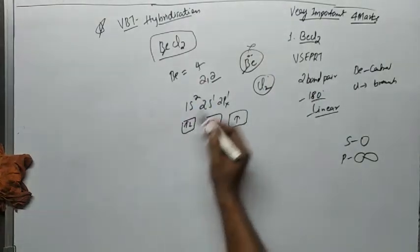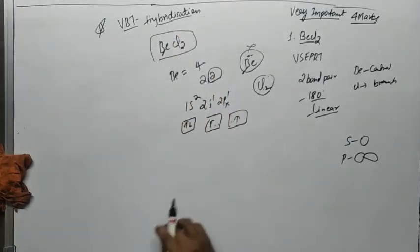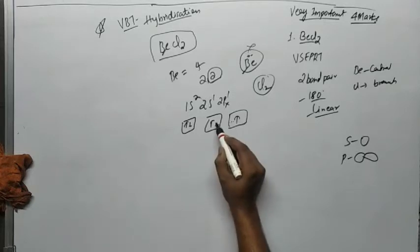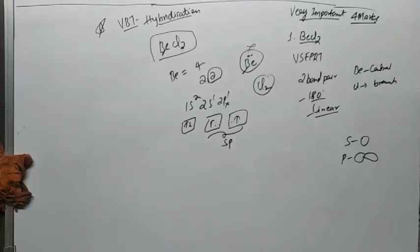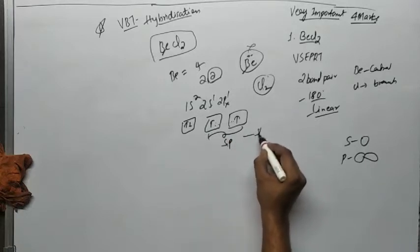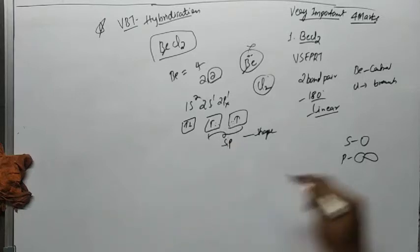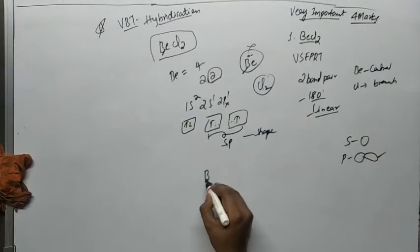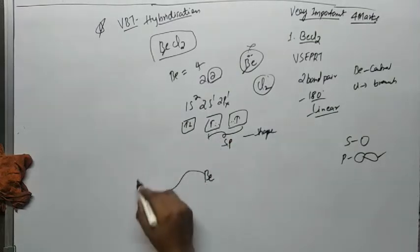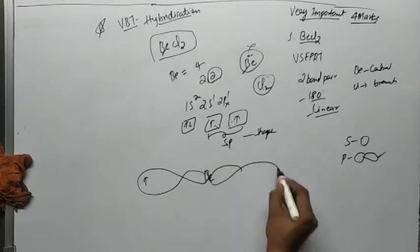Now in BeCl2, beryllium has 4 electrons total with 2 in its last shell. After electron promotion, an electron is shared between the s and p orbital. These two orbitals become sp hybrid orbitals. Beryllium now has one electron in the first sp hybrid orbital and one electron in the second sp hybrid orbital.